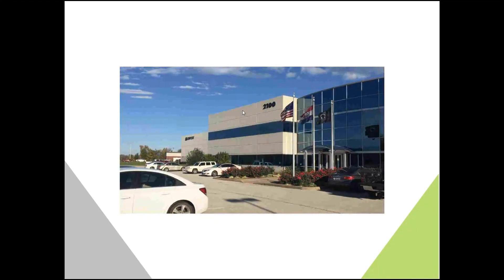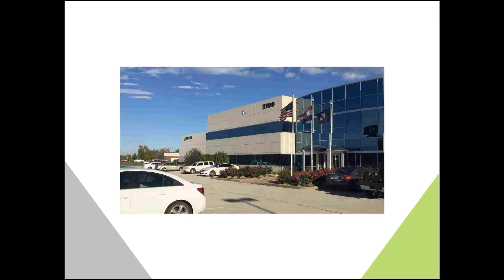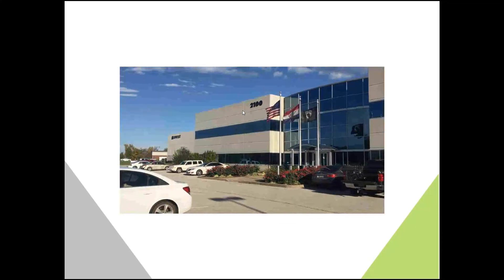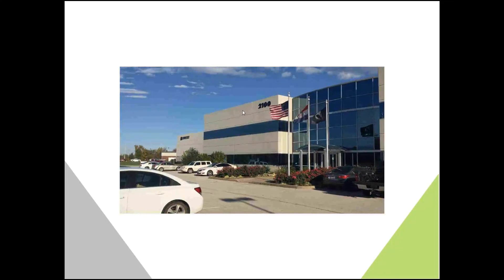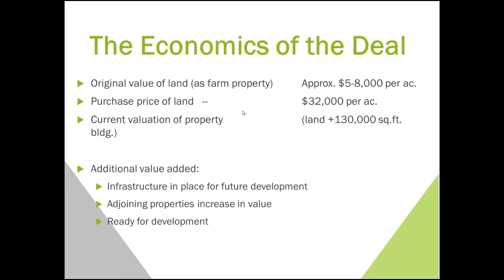Here is the 130,000-square-foot facility — headquarters to Midwest Motorcycle. They distribute and manufacture in Mexico, but they distribute aftermarket parts for Harley-Davidson. The economics of the deal: the original value of the land as farm property was approximately $5,000 to $8,000 per acre. We purchased it at $32,000 an acre — which made my seller very happy. At the same time, my buyer was happy because there was nowhere he could have found land at that price to build his first building in the industrial park he wanted to build.